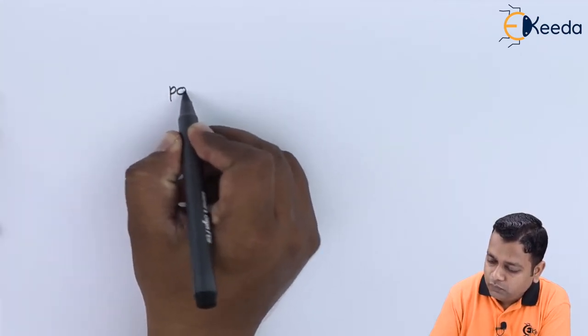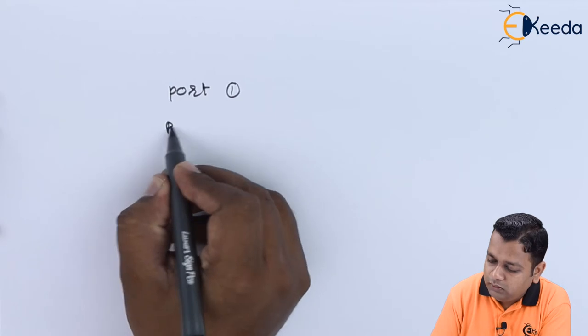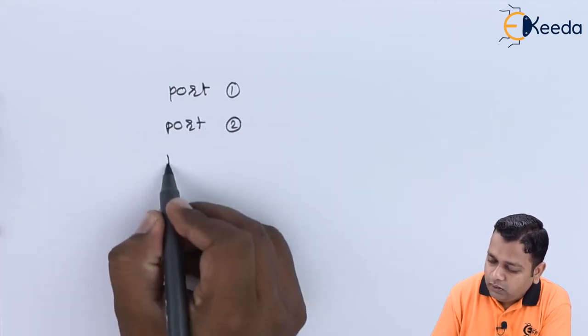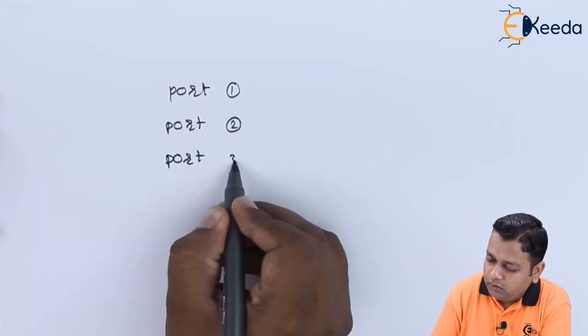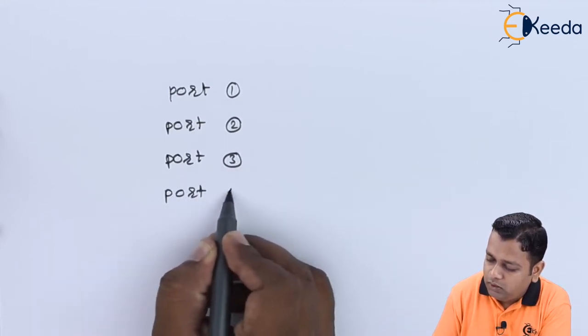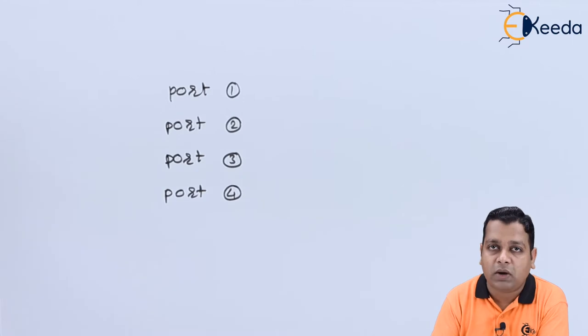The four microstrip lines are basically transmission lines. The endpoints or openings of the transmission lines are nothing but the ports. Therefore, for the Lange type of hybrid coupler we have four ports, named port number one, port number two, port number three, and port number four as shown in the schematic diagram.